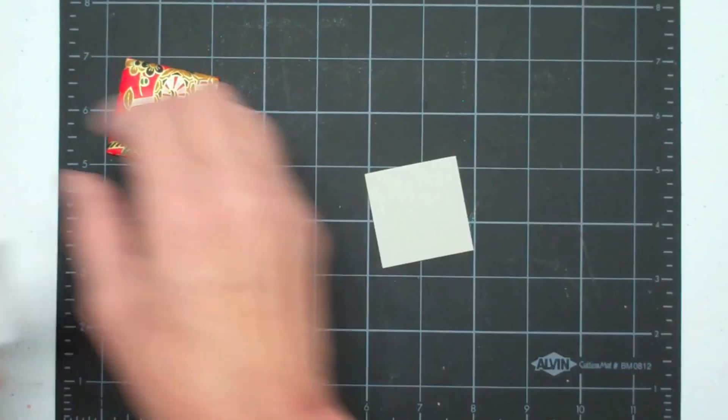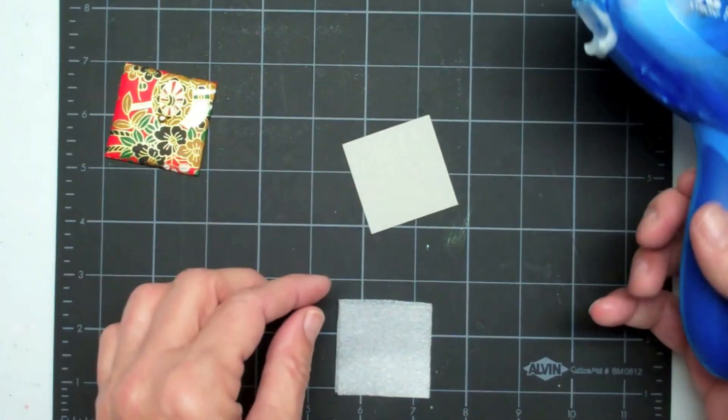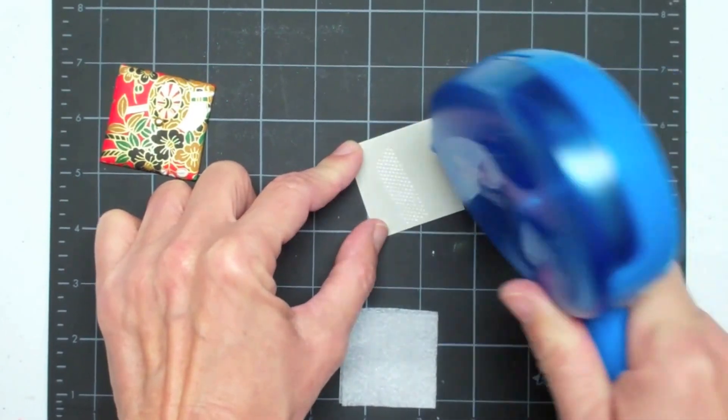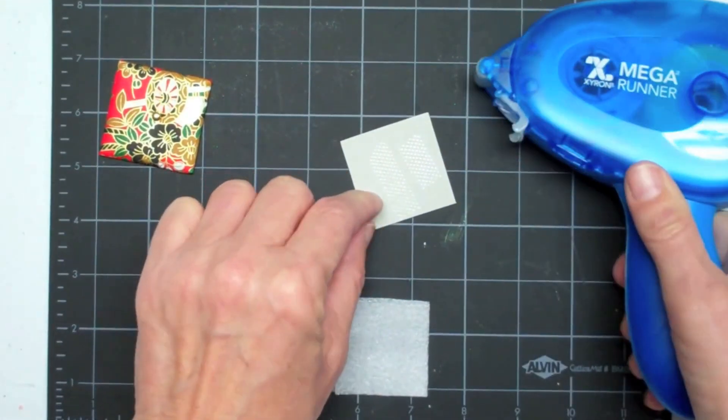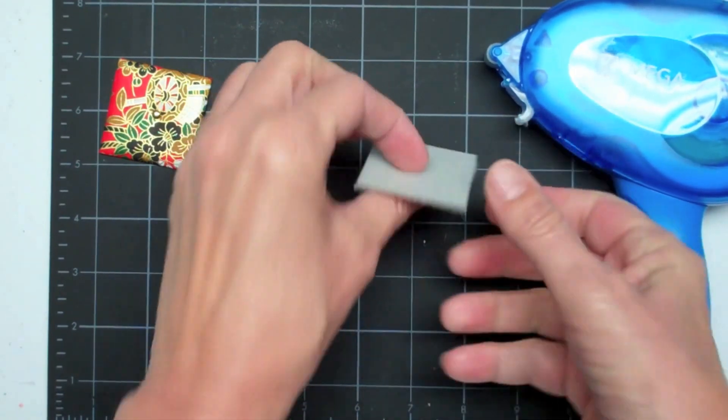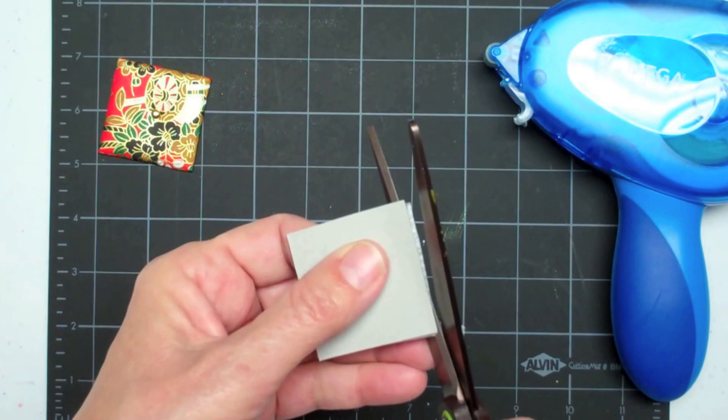I'm using an ATG Mega Runner which is very handy. I'm going to put some adhesive on the back of my chipboard and just lay that on top.